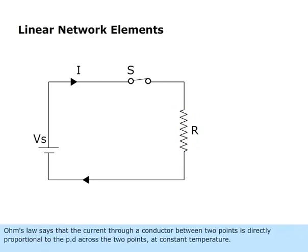Ohm's law says that the current through a conductor between two points is directly proportional to the PD across the two points at constant temperature.